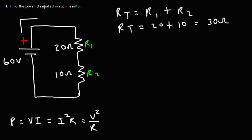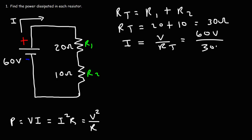Next, we need to calculate the current flowing in the circuit. We can use Ohm's Law — it's going to be the voltage of the battery divided by the total resistance. Because there's only one path for the current to flow, the current flowing through R1 and R2 is the same. It's 2 amps.